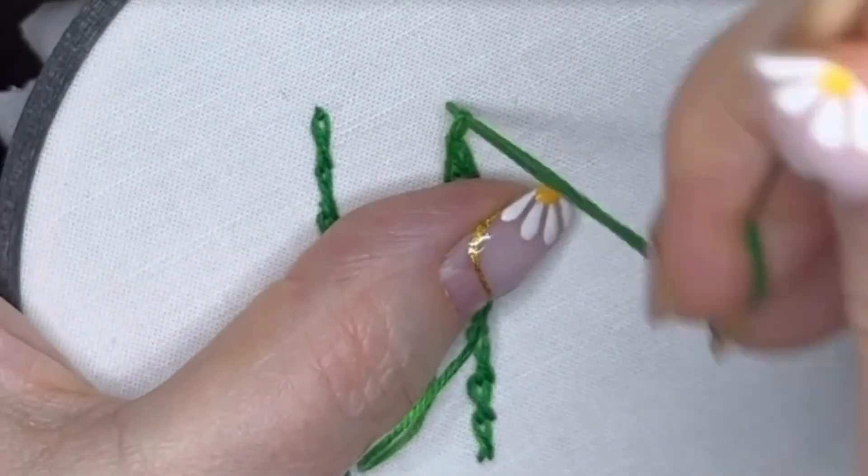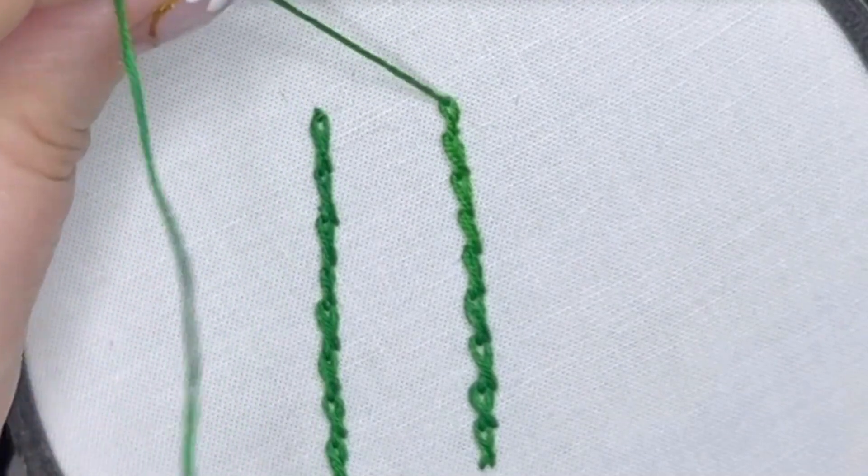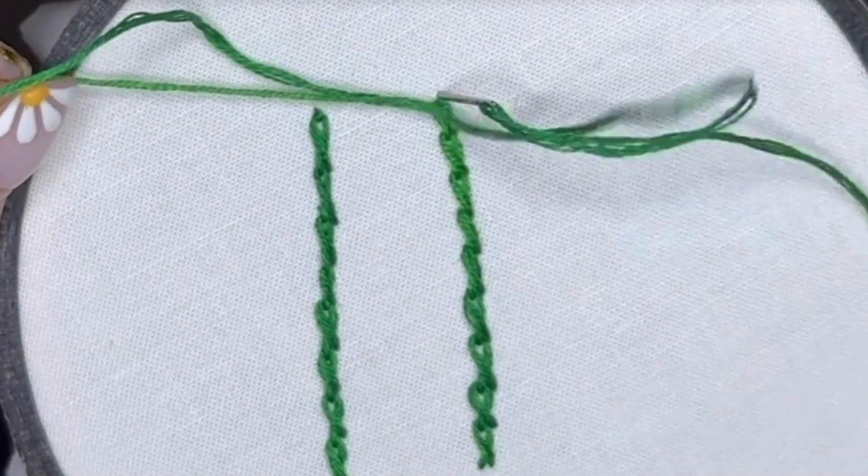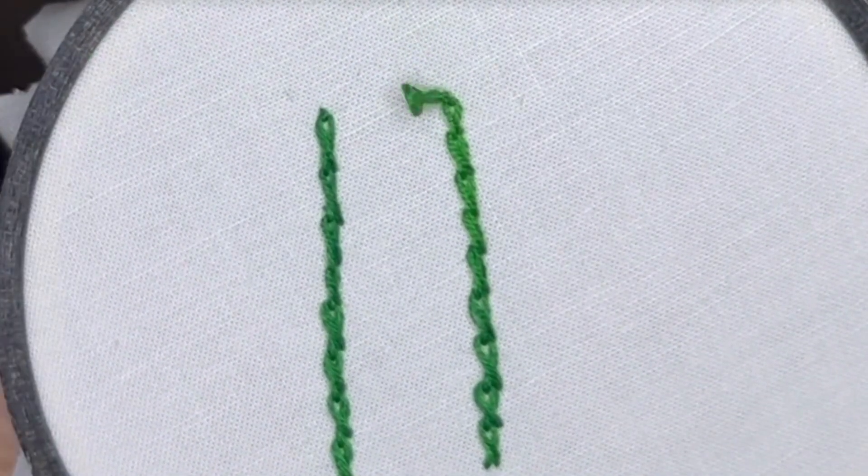What you're going to do is your final loop, and then you're going to take your needle back down through the fabric at the top as you would finish any chain stitch, just like normal.